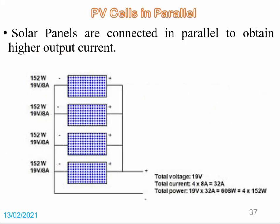Now, how to connect solar panels in parallel. To connect in parallel, we connect each positive terminal of each PV cell to the other positive terminals. Similarly, we connect all negative terminals together. We then take the output from the combined positive and negative terminals.